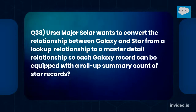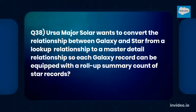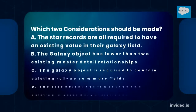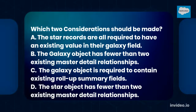Question number 38. Ursa Major Solar wants to convert the relationship between Galaxy and Star from a lookup relationship to a master-detail relationship, so each Galaxy record can be equipped with a roll-up summary count of Star records. Which two considerations should be made?